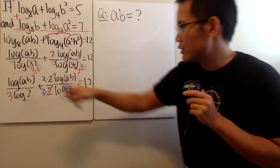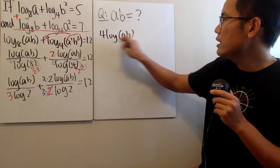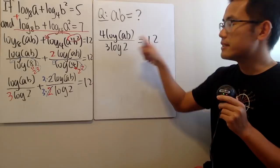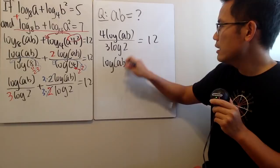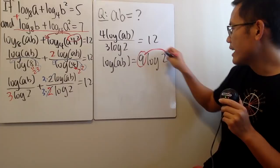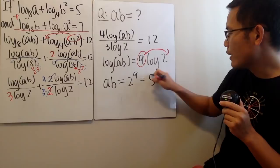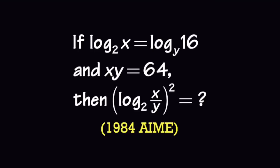They have the same denominator. On top, we can just combine: this is 1 and that's 3, so we have altogether 4 log AB over 3 log 2, and that's still equal to 12. Multiply this to the other side, that would be 36. Divide the 4 on both sides, so you see log AB equals 9 log 2. Put the 9 here, cancel the log — we just care about the inside. So AB has to be 2 to the 9th power, and that works out to 512. And this right here is the answer.